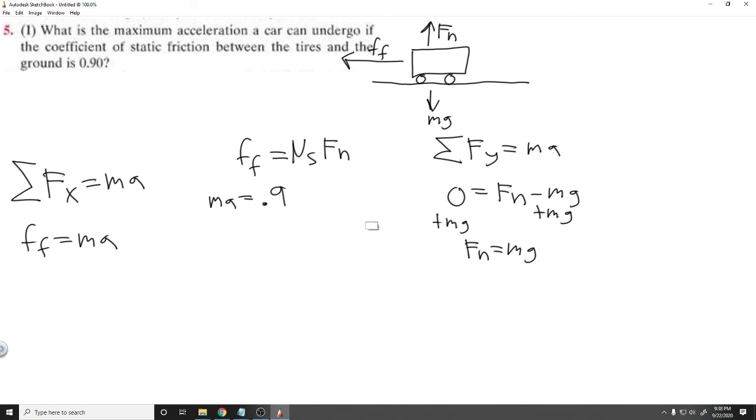So 0.9 times mg, our normal force. And so now what you should notice is that we can solve for a. But we don't know the mass, but what you should see is that m and m can cancel because we have one on each side. So our acceleration is just going to be 0.9 times g, which is the force of gravity.